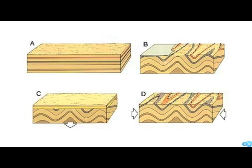This one is showing you the formation of an angular unconformity. Initially, you have flat-lying sedimentary rocks. Then they end up getting buckled by compressional forces from both sides — like mountain-building forces — and then some of them get eroded. Eventually, more sediments deposit on top. So the order from oldest to youngest is A, D, B, C.